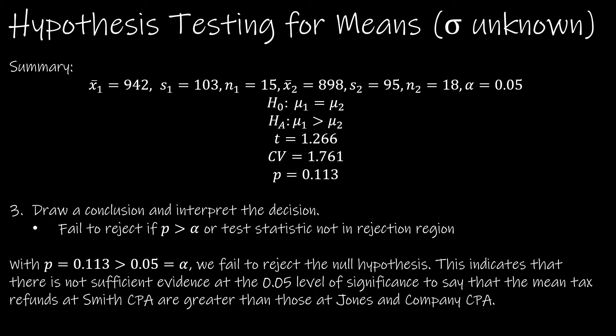So again, our conclusion based both on the rejection region and on the test statistic, P being greater than alpha, is that we fail to reject the null hypothesis. So remember, there's three parts. We say this is the data. This is what the data tells us to do. This is what it means. So with P greater than alpha, we fail to reject the null hypothesis.